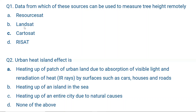Landsat is a joint NASA and USGS program that represents the world's longest continuously acquired collection of space-based moderate resolution land remote sensing data. Cartosat is a stereoscopic Earth observation satellite in a sun-synchronous orbit developed by ISRO. Cartosat combines cartography and satellite — cartography means map making. It can generate images which help retrieve vertical height, including three-dimensional images, making tree height measurement possible with Cartosat.